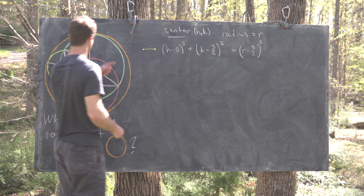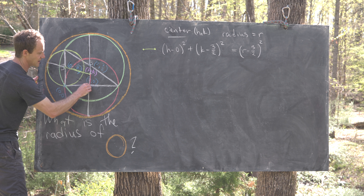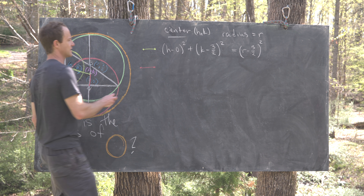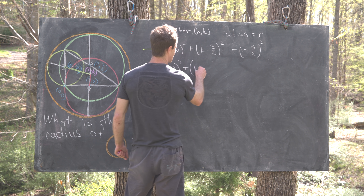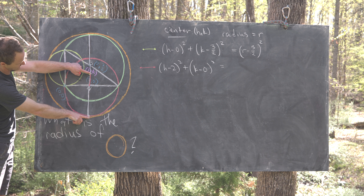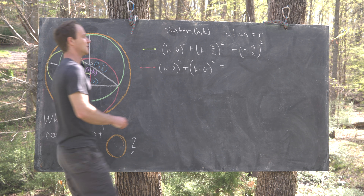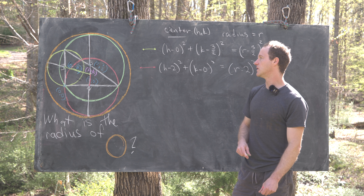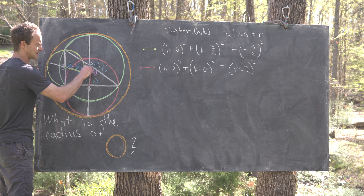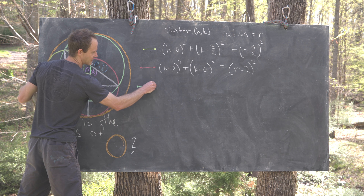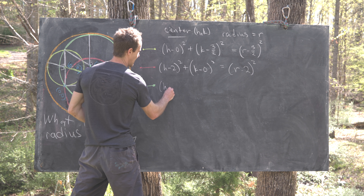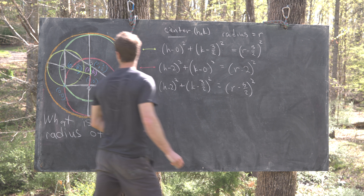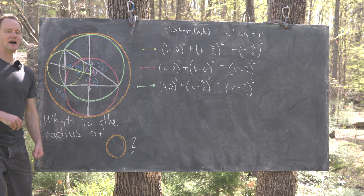Similarly, for the red circle centered at (2, 0): (h − 2)² + k² = (r − 2)², which expands to h² − 4h + k² = r² − 4r, with the fours canceling. For the green circle centered at (2, 3/2): (h − 2)² + (k − 3/2)² = (r − 5/2)², giving h² − 4h + 4 + k² − 3k + 9/4 = r² − 5r + 25/4.